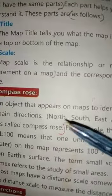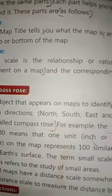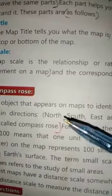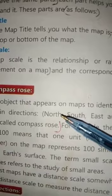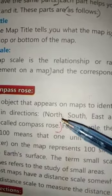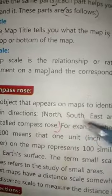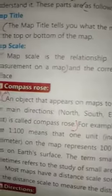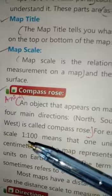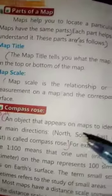The four directions are: North — Shemal, South — Junub, East — Mashriq, and West — Maghrib.